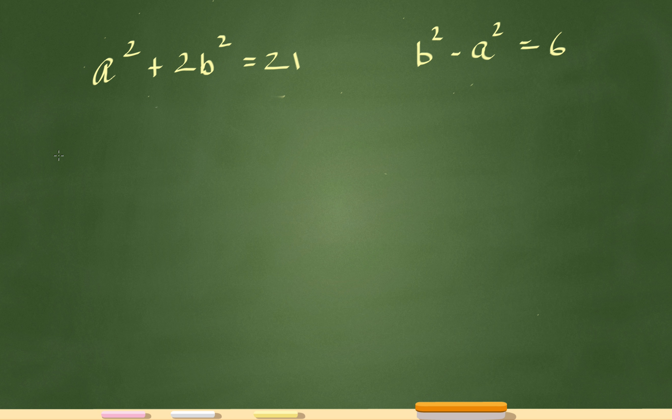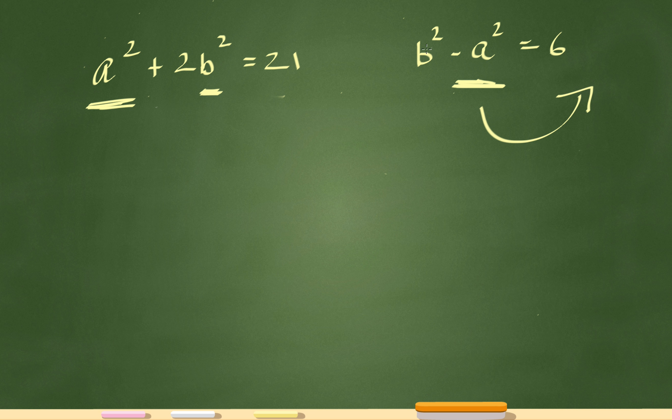I'm going to see how over here I have a b squared, and over here I have an a squared. I realize that if I bring this negative a squared over here, then I'll know what the value of b squared is, and then I can plug that b squared in right there, and I'll solve for the problem.